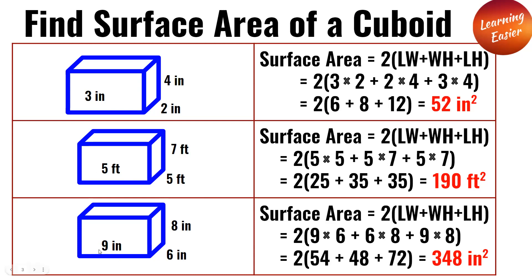The third cuboid: the length, width, and height are 9 inches, 6 inches, and 8 inches. 2(9×6 + 6×8 + 9×8). 9 times 6 is 54, 6 times 8 is 48, 9 times 8 is 72. 2(54 + 48 + 72) is equal to 348 inches squared.